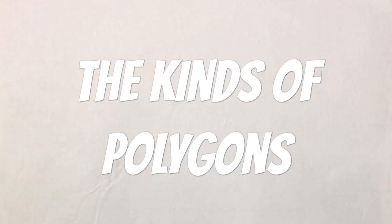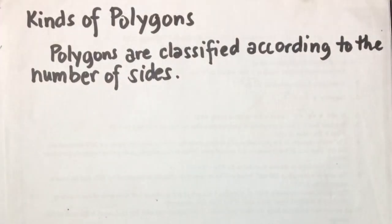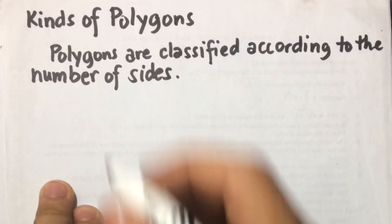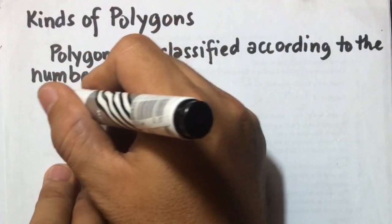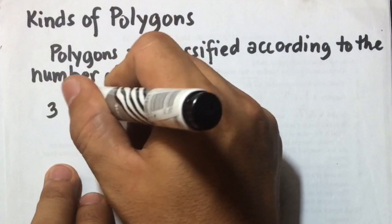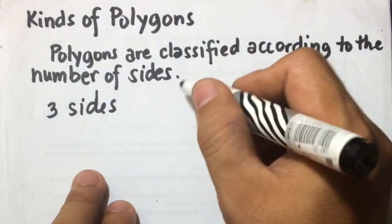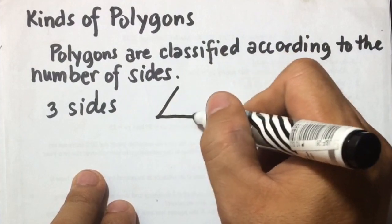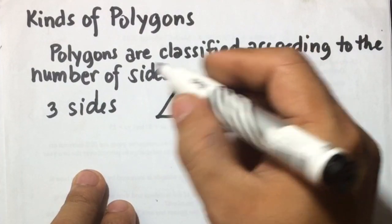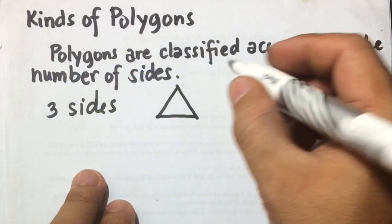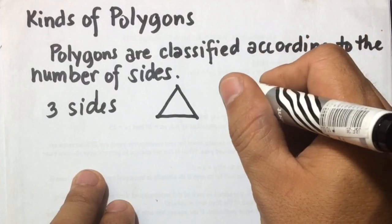Hi guys, in this video I'm going to discuss the kinds of polygons. Polygons are classified according to the number of sides. For example, if you're going to have a polygon with three sides — if you're going to draw that polygon, this is a polygon with three sides. So if you're going to have three sides, you can name that one as triangle.